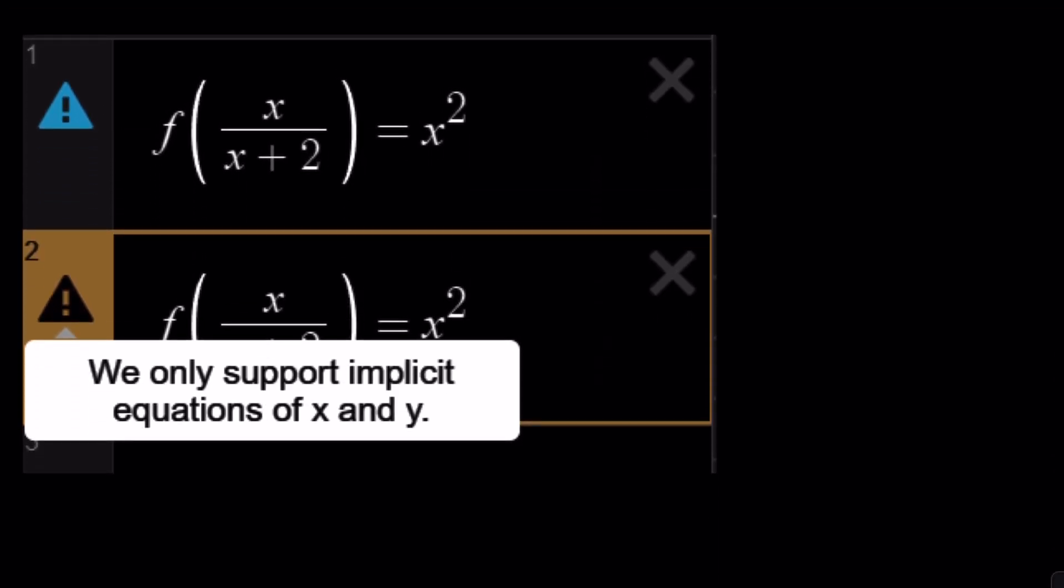What about Desmos? Desmos can't do it either. It doesn't even understand the expression. It says, we only support implicit equations of x and y. Well, I'm sorry. They can't solve it. So hopefully there is some type of software or somebody is going to come up with a program that can solve these kinds of equations. I haven't tried ChatGPT. Maybe you can solve it. If I do, I'll let you know what the results are. Because a lot of times I find it pretty weak when it comes to solving. I tried some functional equations and it just kept giving me something pretty standard, but it doesn't solve the problem.